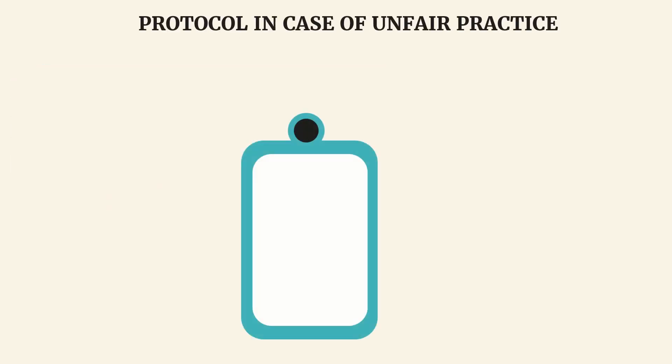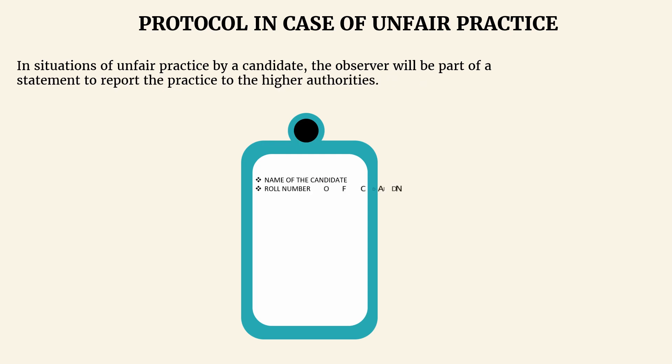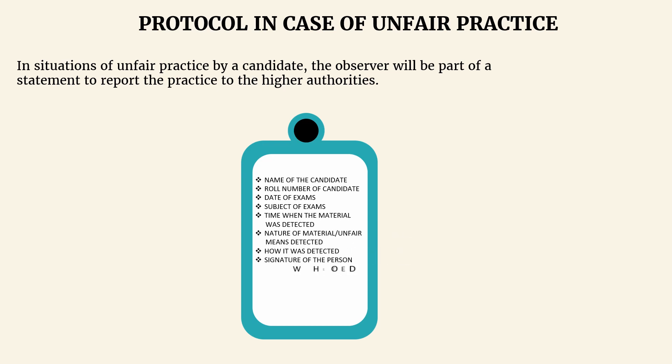In situations of unfair practice by a candidate, the observer will be part of a statement to report the practice to the higher authorities. The statement will include the name of the candidate and the roll number, date of exams, subject of exams, time when the material was detected, nature of material or unfair means detected, how it was detected, signature of the person who detected the unfair means or material, and counter signature of the centre superintendent on each paper.